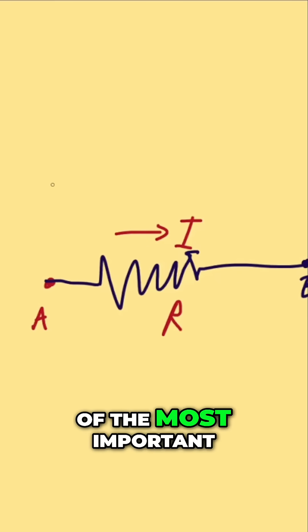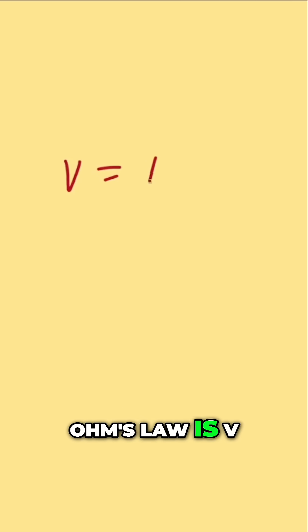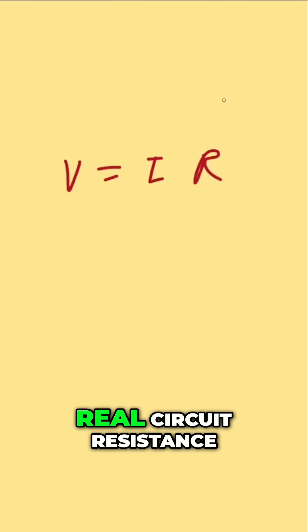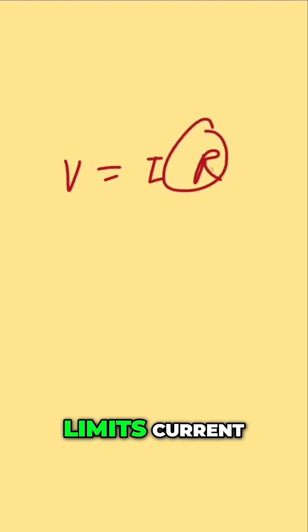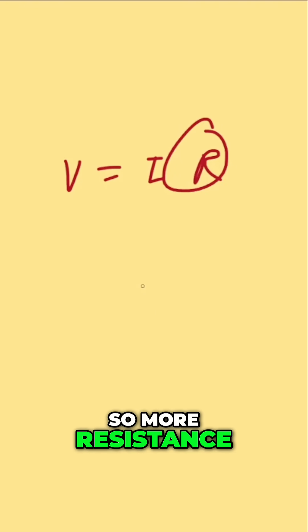Here's a quick recap of the most important things we talked about. Ohm's law is V equals I R, and it predicts how current behaves in every real circuit. Resistance limits current, so more resistance, less current.